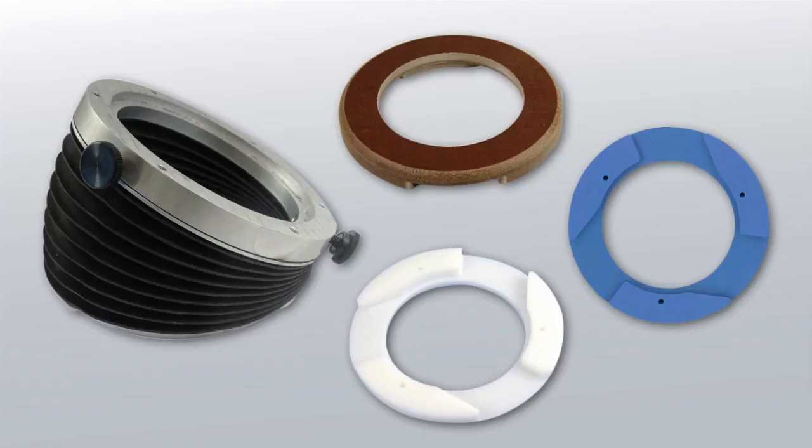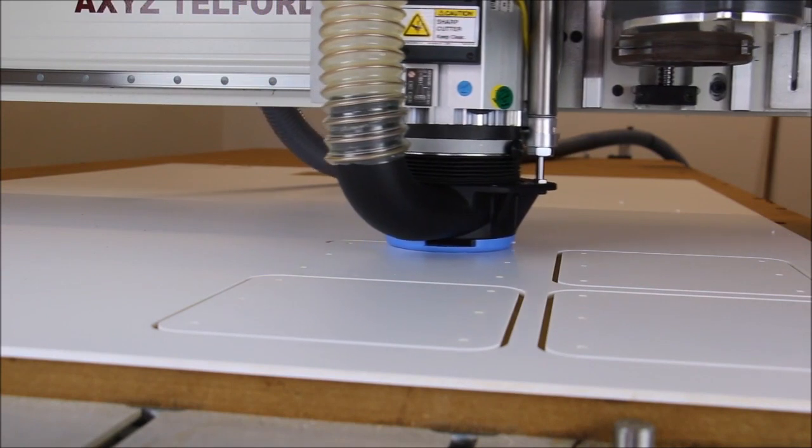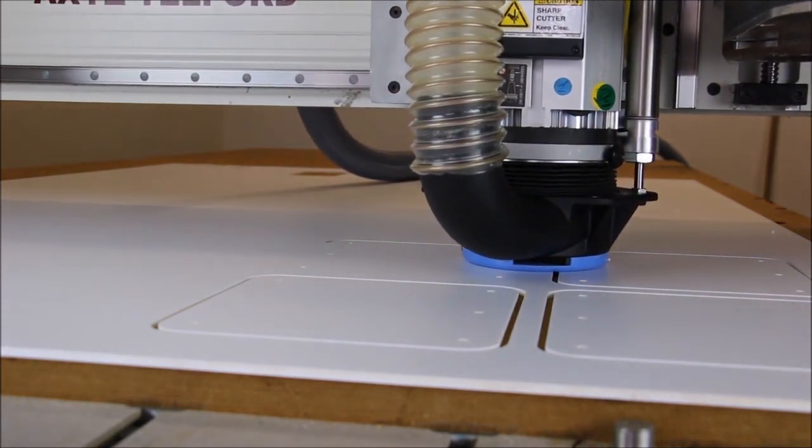Accessories such as the bellows seal and different types of doughnut make this a versatile and efficient solution. Even when the spindle lifts to traverse the next cut, the doughnut will maintain contact with the material.